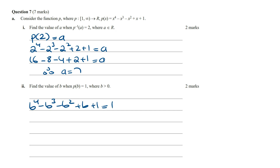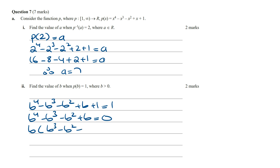Subtracting 1 from both sides, we get b to the power of 4 minus b cubed minus b squared plus b equals 0. We can take b as a common factor, giving b times b cubed minus b squared minus b plus 1 equals 0.